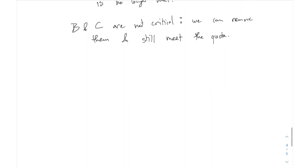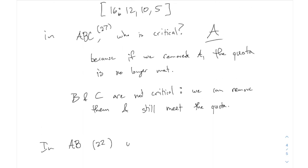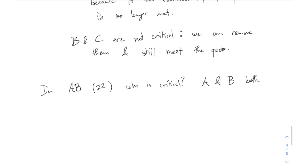Let's try another example. In the combination A and B, which added up to 22 — the quota is 16 — who is critical? Both A and B are critical, because they add up to 22, but if you remove either one, the total dips below 16. Similarly, in the combination A and C, which adds up to 17, again both of them are critical. The Banzhaf index is about counting up how many times each voter is critical.